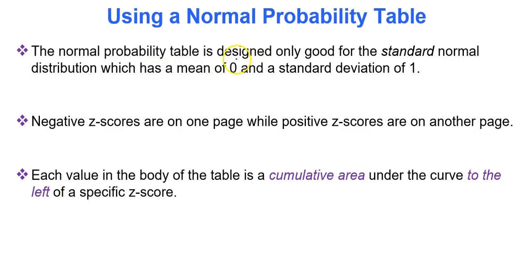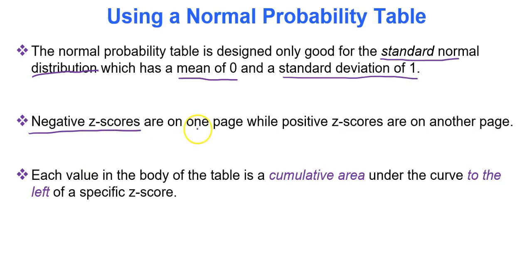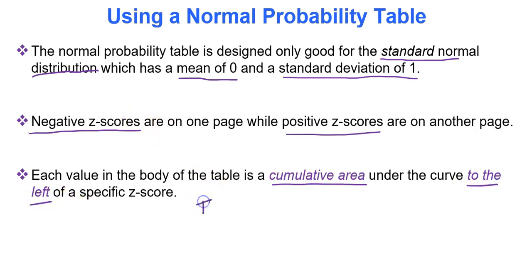The normal probability table is designed and is only good for the standard normal distribution — that's z-score values, with a mean of zero and a standard deviation of one. Negative z-scores are on one page with their corresponding areas to the left, while positive z-scores are on another page with their corresponding areas to the left. Each value in the body of the table is a cumulative area under the curve to the left of the specific z-score. So the table gives area to the left of a specific z-score value, not area to the right.